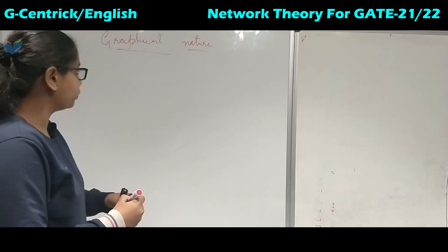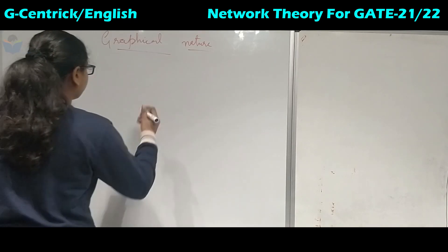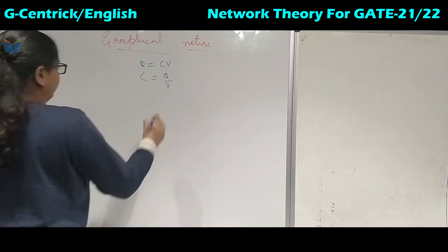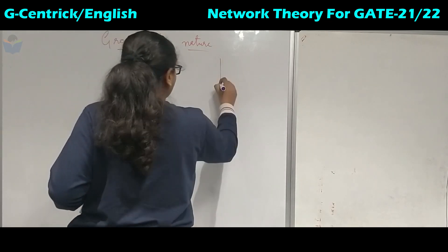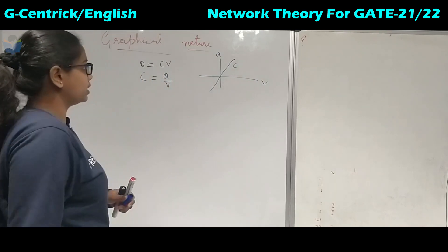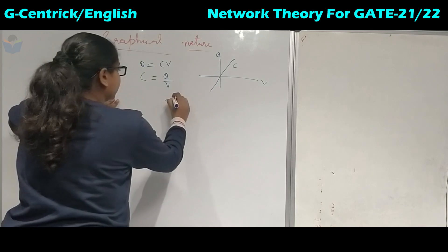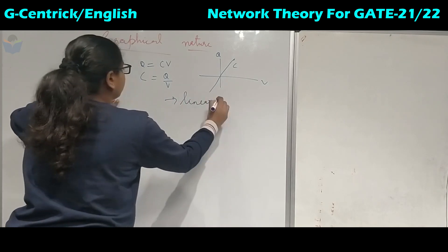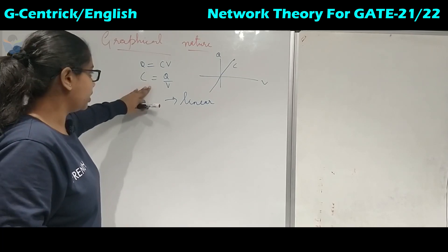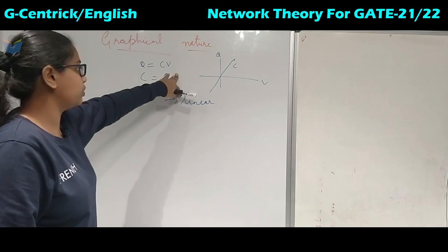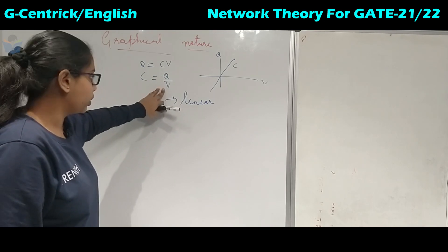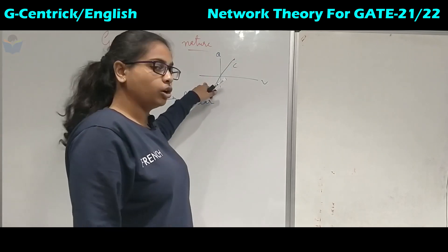Coming to the graphical nature of capacitance: we know Q equals C times V and C equals Q upon V. On a graph with Q on the vertical axis and V on the horizontal axis, the slope is C. This is a linear relationship passing through the origin, similar to resistor and inductor. Capacitance depends on the ratio of charge to voltage, not individual values.